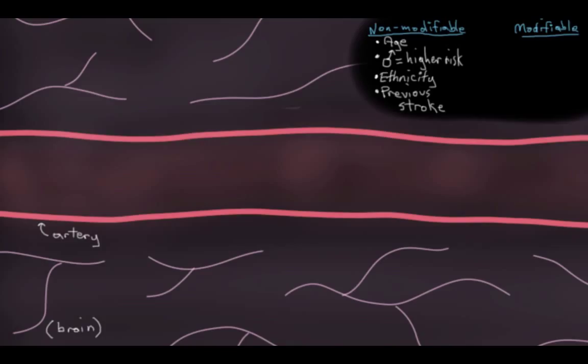But what can we do something about? Well, the biggest modifiable risk factor for stroke is hypertension or high blood pressure. Let me show you two ways in which hypertension predisposes you to stroke.